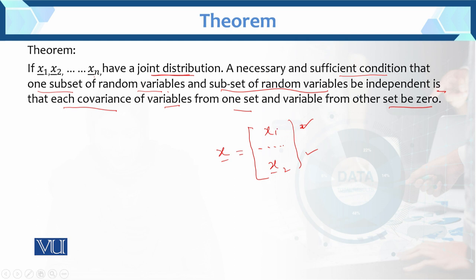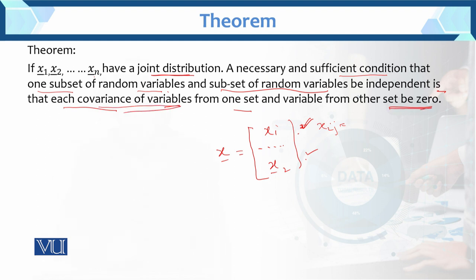It means the covariance term you have here will be equal to zero. The covariance term of xi and xj — covariance of x1, xi and x2, xj — that covariance term will be equal to zero. The covariance term between the two subsets is zero. So we are saying that this set and this set — their covariance of variables — is also equal to zero. This is the statement of the theorem.